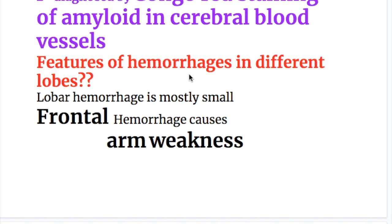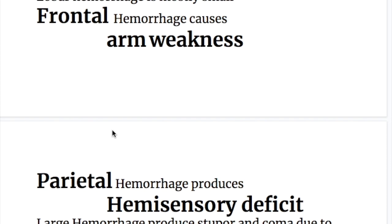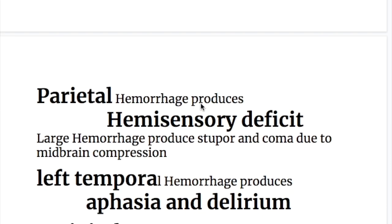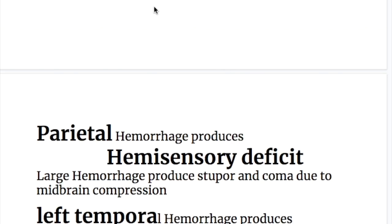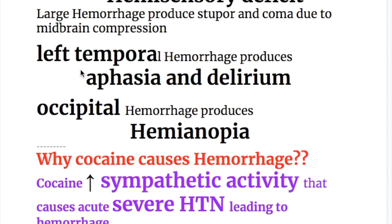Lobar hemorrhages in amyloid angiopathy are mostly small microbleeds. Frontal hemorrhages cause arm weakness. Parietal hemorrhages cause hemisensory deficits. Large hemorrhages produce stupor and coma due to midbrain compression. Left temporal hemorrhages produce aphasia and delirium. Occipital hemorrhages produce hemianopia.